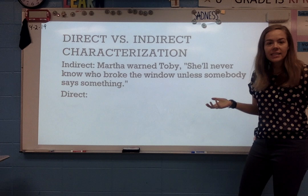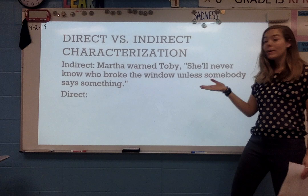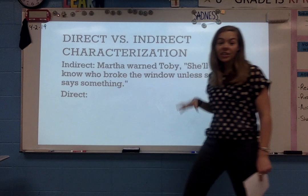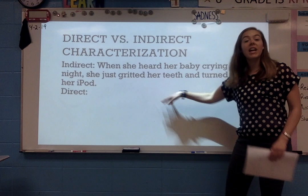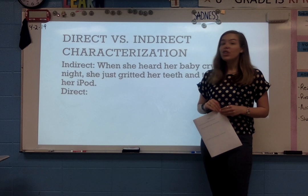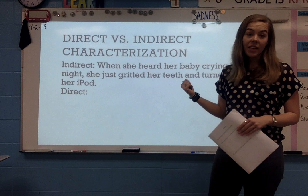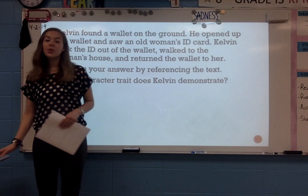Or we could go the other way — here's the indirect one: 'Martha warned Toby, she'll never know who broke the window unless somebody says something.' I could make an inference about Martha based on this, or I could just make it really direct and say, 'Martha is sneaky.' That tells you straight out without making an inference. Another example: 'When she heard her baby crying last night, she just gritted her teeth and turned up her iPod.' That's all indirect — we have to infer about her. Or I could make it more direct and say she's really frustrated with her child, or she's really tired. Those would be more direct characterizations.